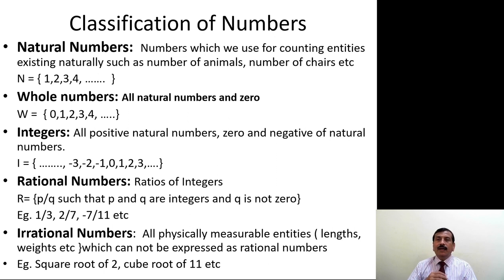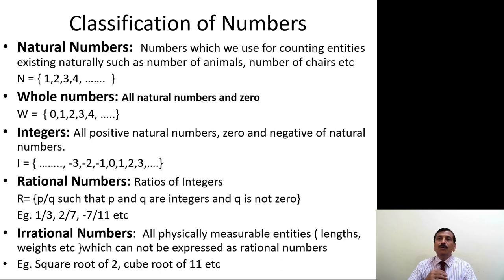Whole numbers include all natural numbers and 0 as well. Integers consist of all positive natural numbers, 0, and all negative natural numbers — that is, natural numbers with a negative sign. So integers run from minus infinity through minus 3, minus 2, minus 1, 0, then 1, 2, 3, up to plus infinity.